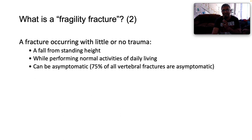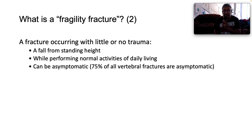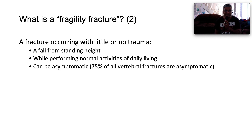What is a fragility fracture? For two marks: it is a fracture occurring with little or minimal trauma, such as a fall from standing height or while performing normal activities of daily living — examples being dressing, eating, ambulating, toileting, and hygiene. Such fractures can be asymptomatic. Did you know that 75% of all vertebral fractures are asymptomatic?